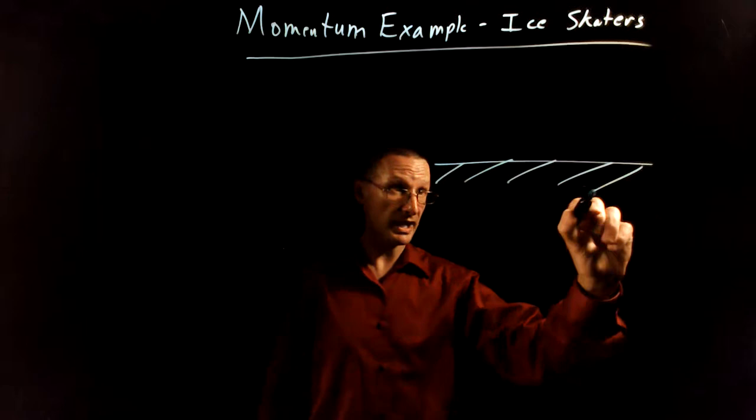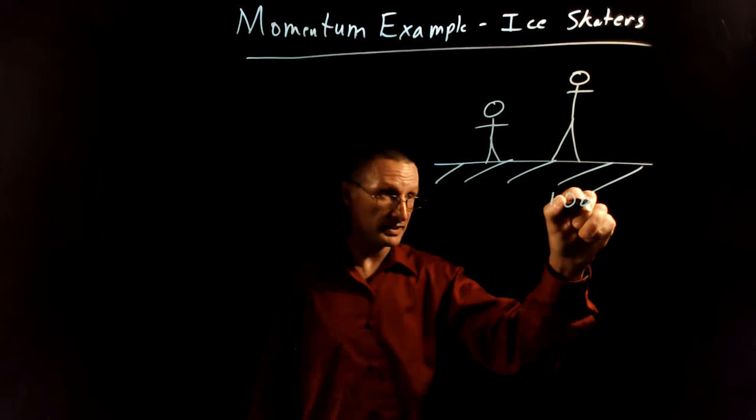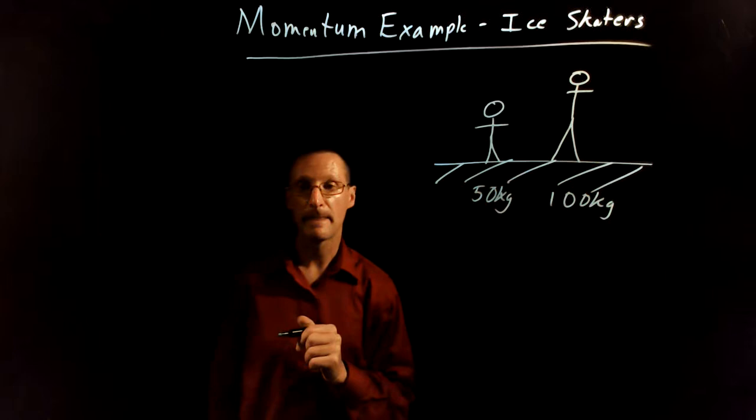So again, the scenario is there's two ice skaters. One of the ice skaters is twice as massive as the other ice skater. I'm going to draw that person a little bit taller here. This person is 100 kilograms and the lighter person is half that, 50 kilograms. They push on each other so this one feels a force this way.